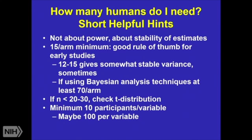If you're using a Bayesian analysis technique, sometimes you need at least 70 people per arm before the analysis is, in fact, stable. A lot of our analyses and regressions float to something called the Z-test. However, if you have a smaller sample size — below 20 or 30, even sometimes below 100 — you need to check a T distribution.